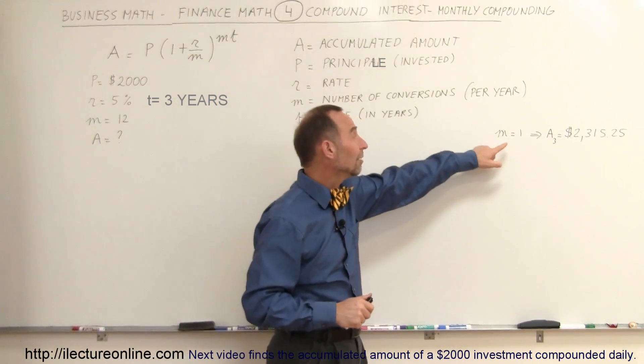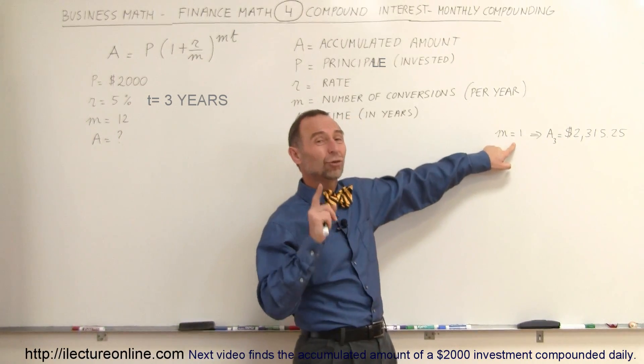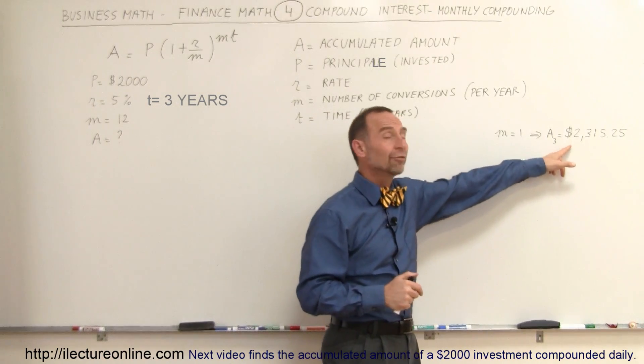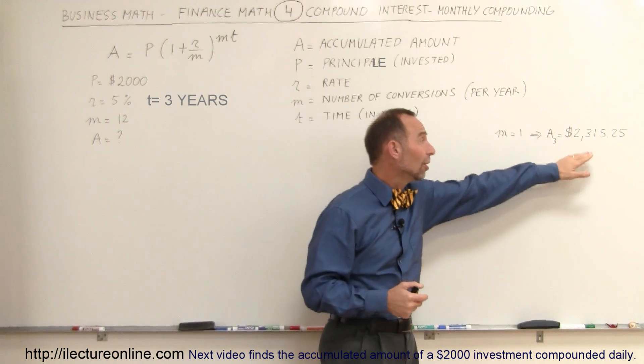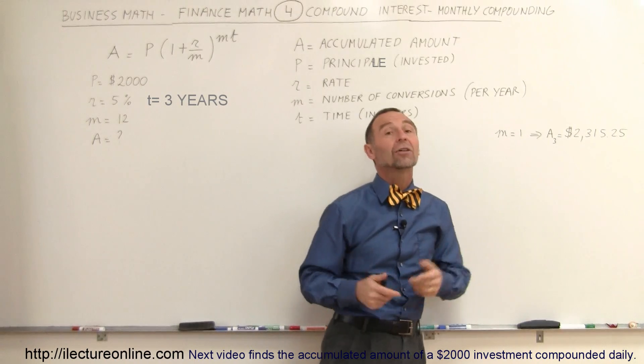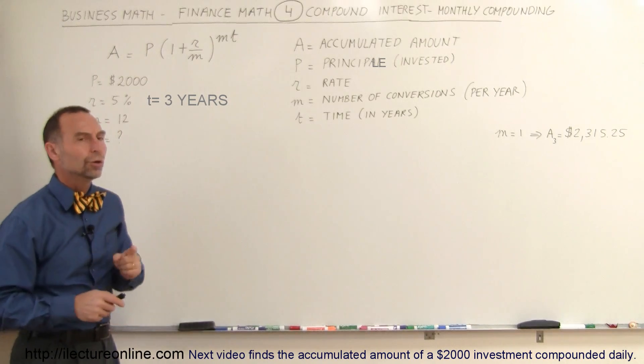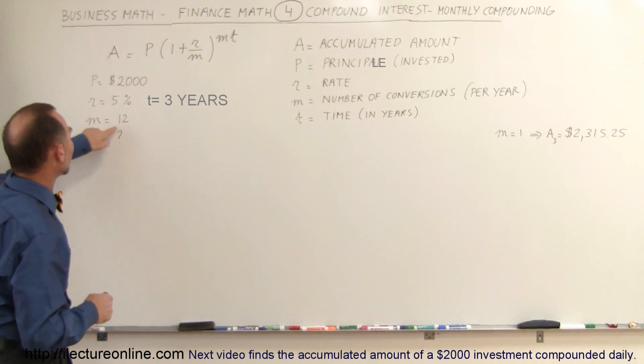In the previous video, we showed that if the number of conversions per year is one, meaning we compound the interest yearly on the $2,000 investment for three years at 5%, we would earn $315.25 of interest. So let's see how much more you would earn if you were to compound monthly.